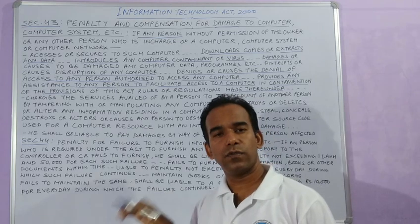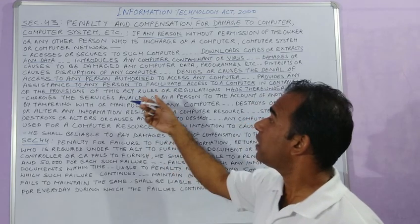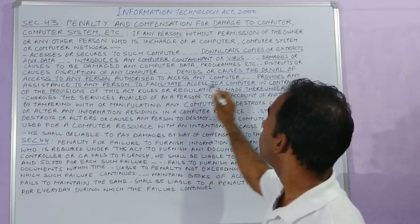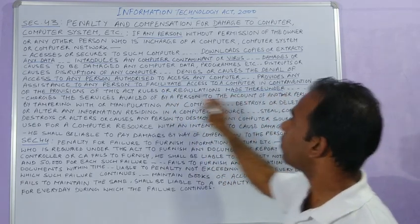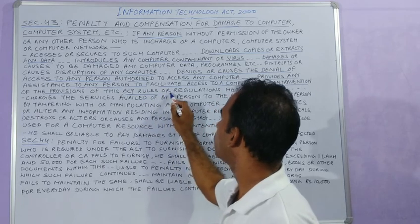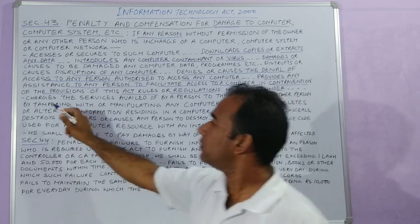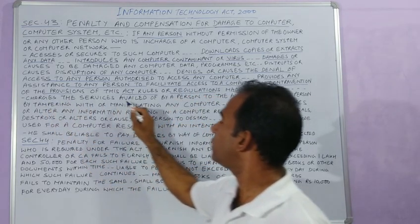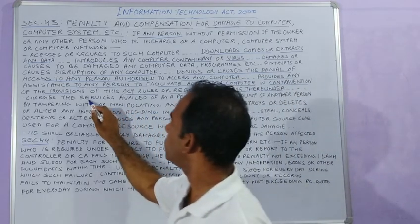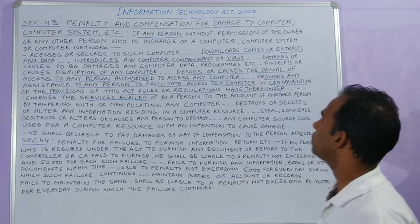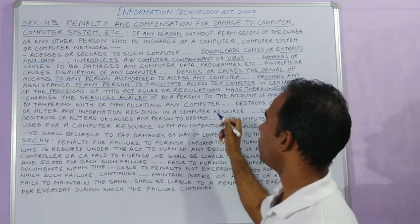— or provides any assistance to any person who facilitates access to a computer in contravention of the provisions of this Act, rules or regulations made thereunder, or charges the services availed of by a person to the account of another person by tampering with or manipulating any computer —